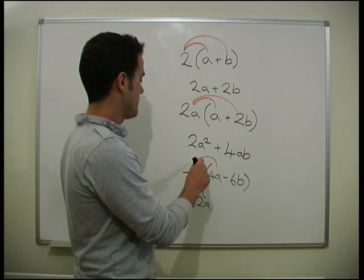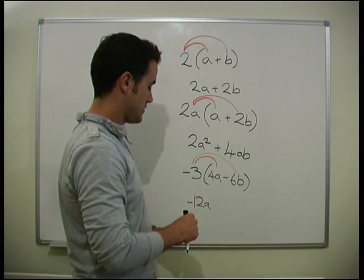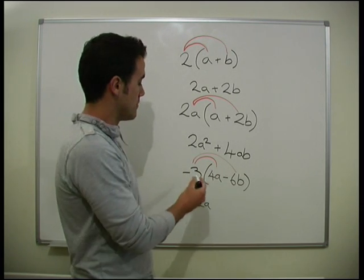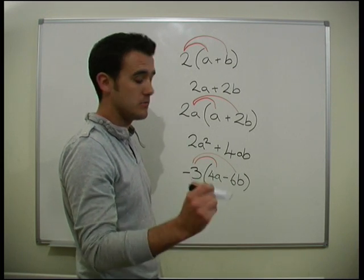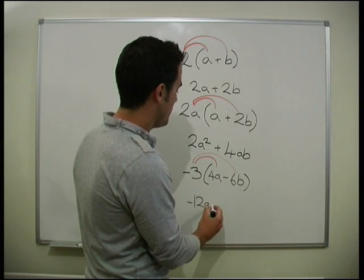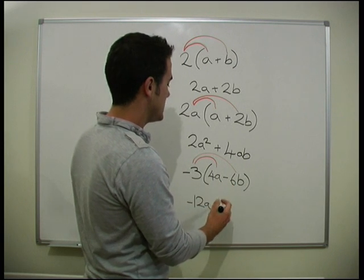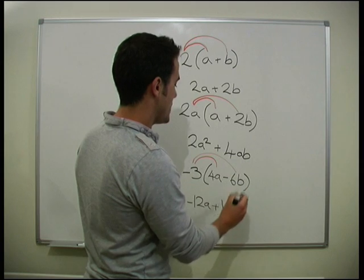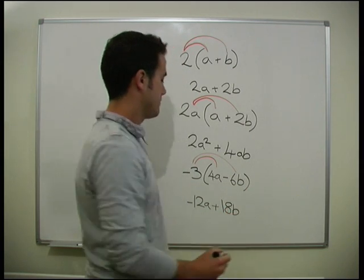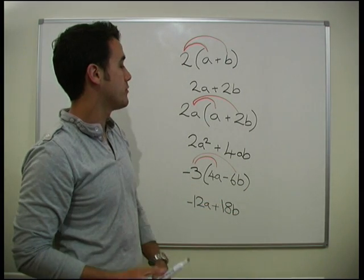Minus 3 times minus 6. What are we going to get here? We're going to get minus 3 times minus 6. Minus and a minus, when timed in, make a plus. So, we're going to get plus 3 times 6, 18b. And that's it. That's multiplying out our brackets.